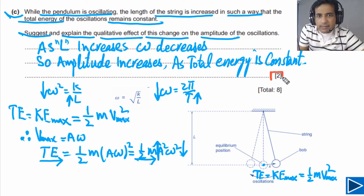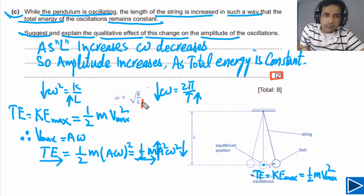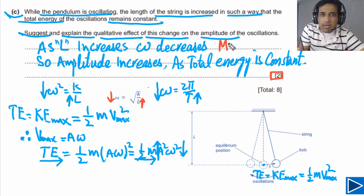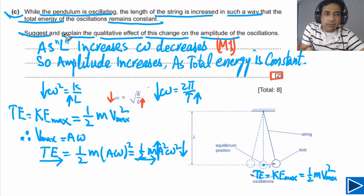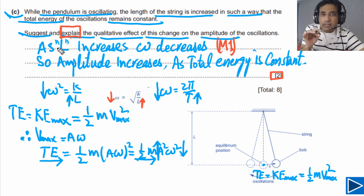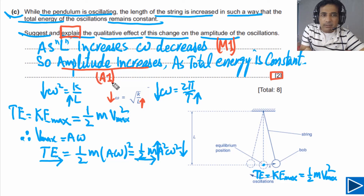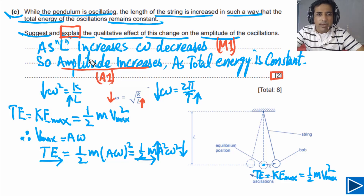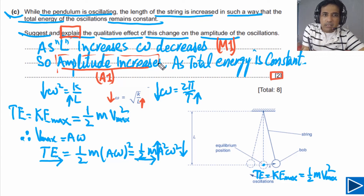This question has two marks. You will get the first mark (M mark) if you have written 'as L increases, omega decreases' — this must be in your answer as the statement. The second mark (A mark) is for writing 'amplitude increases.' You need to write both the statement and the explanation to receive full marks.